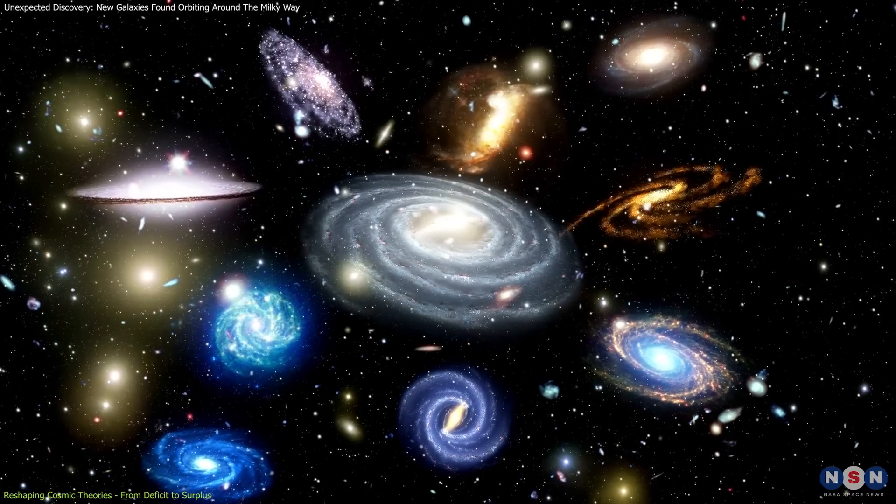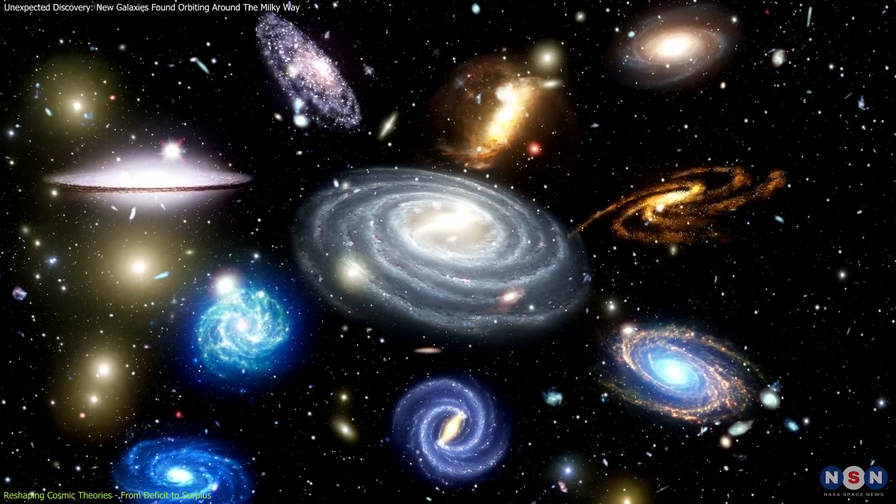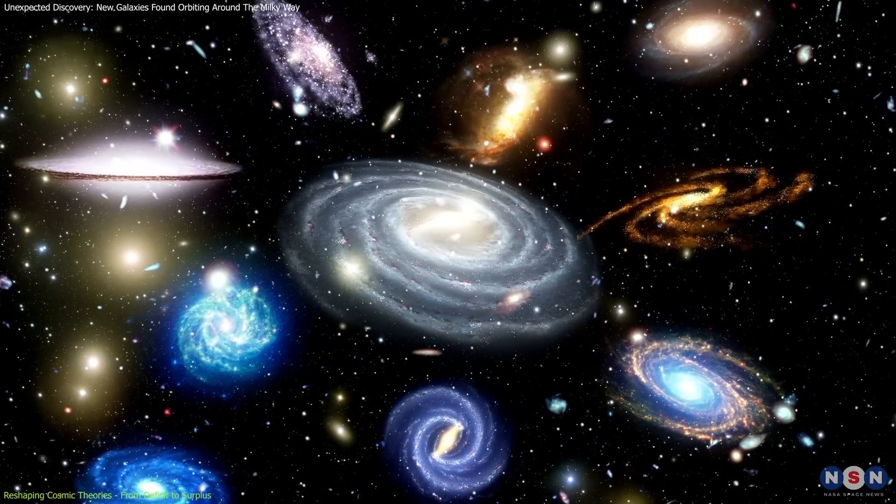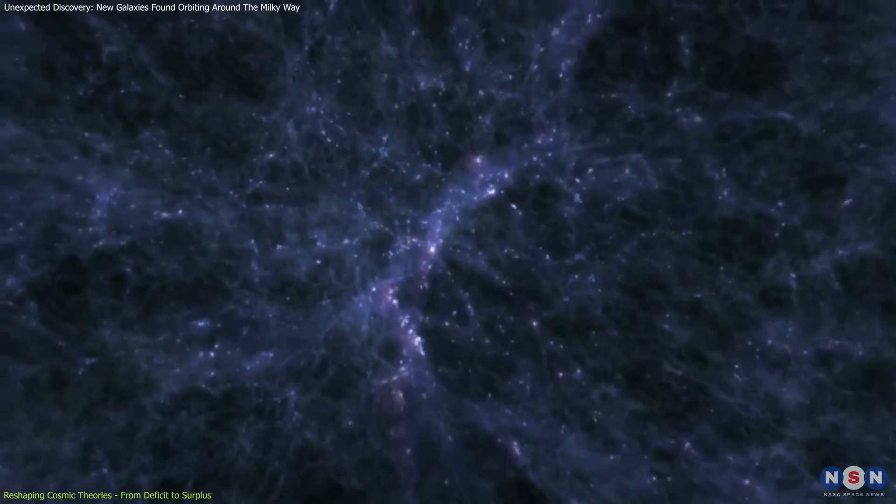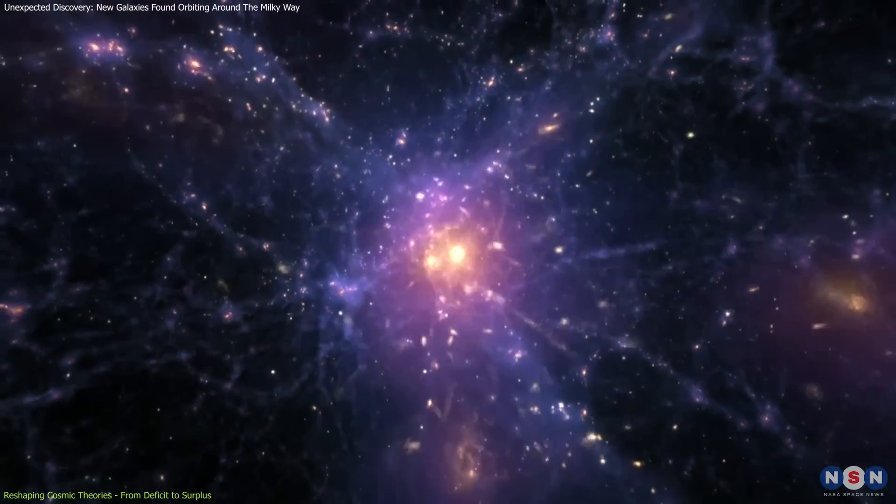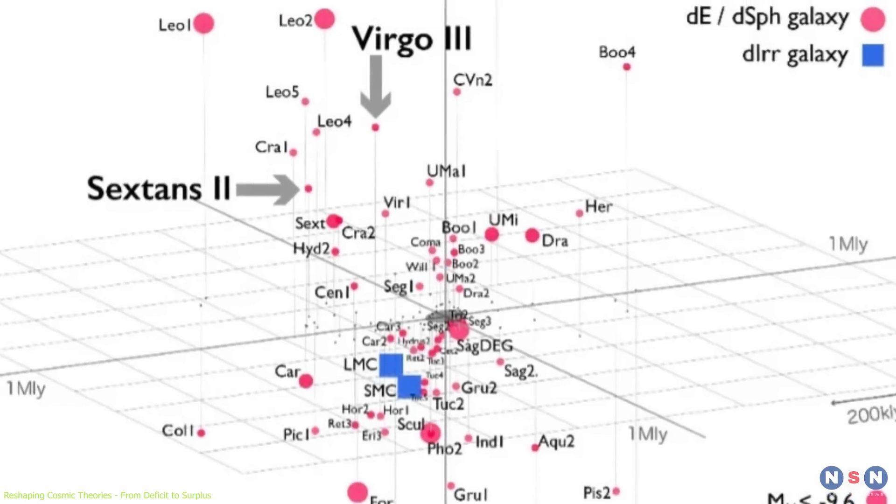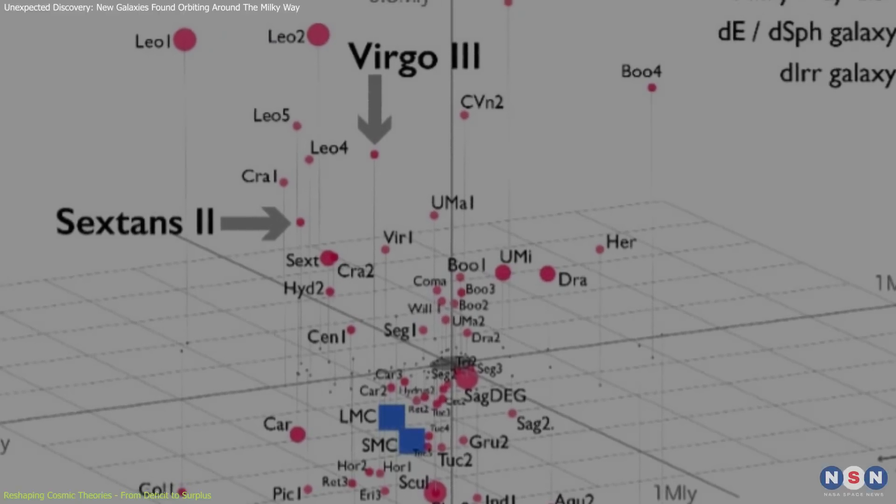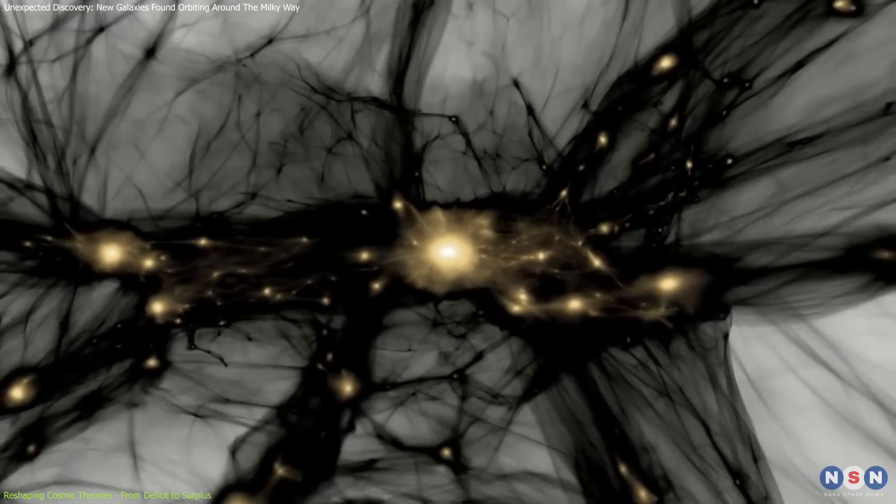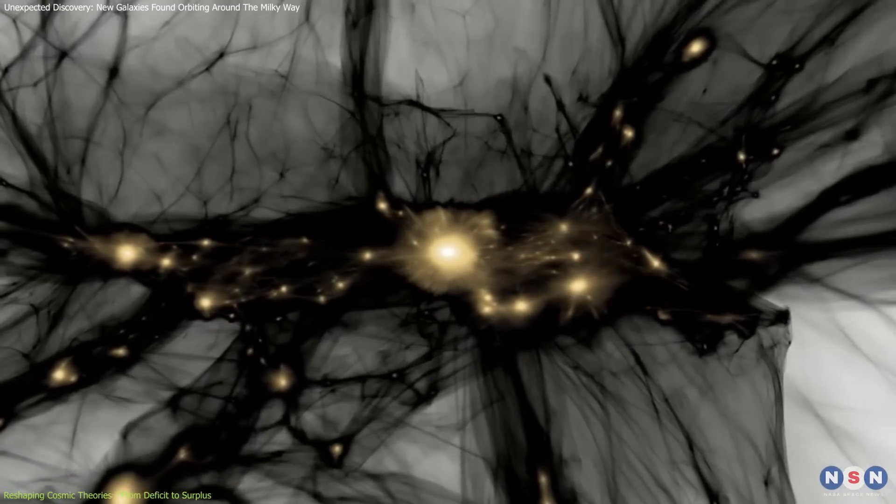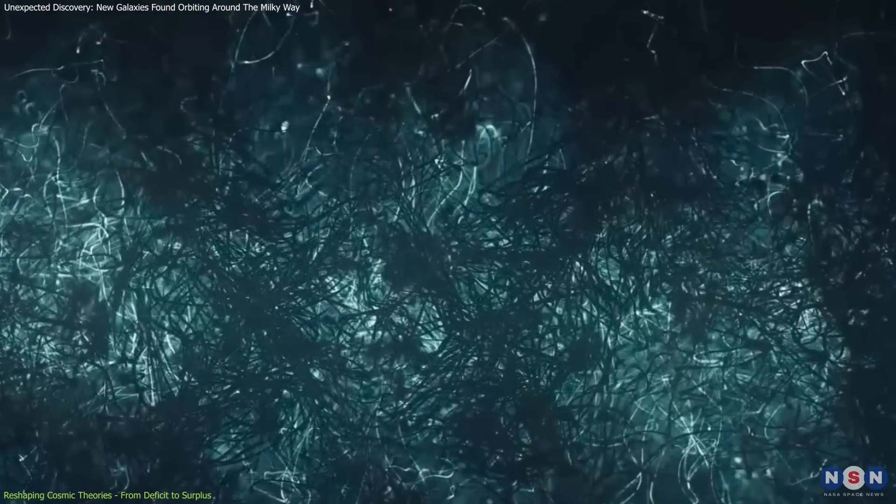To explore these dynamics further, astronomers are leveraging advanced simulations run on supercomputers. These simulations model galaxy formation under various dark matter scenarios to better align theory with observed realities. Such computational models are critical for testing hypotheses about dark matter's distribution and behavior on galactic scales.